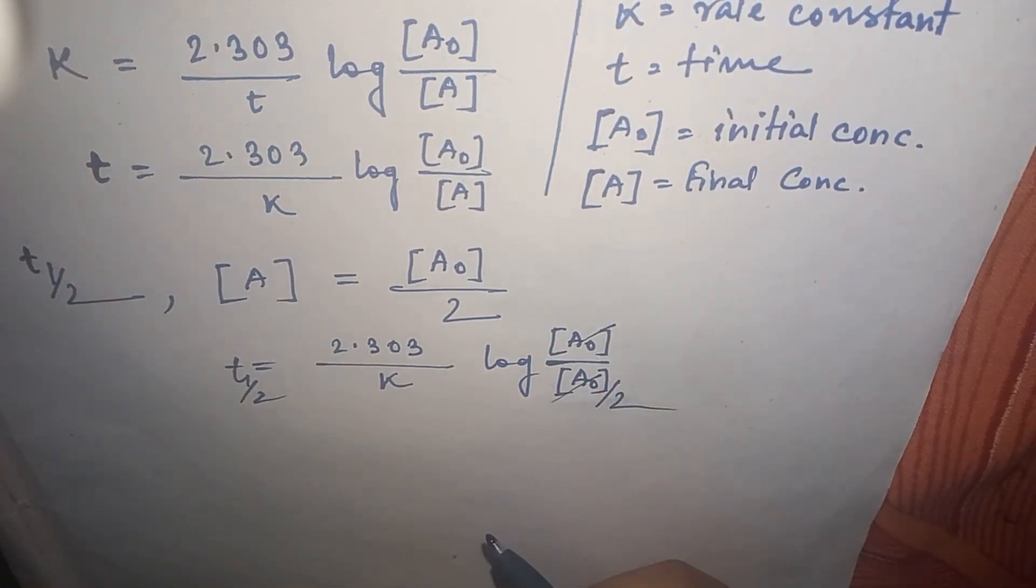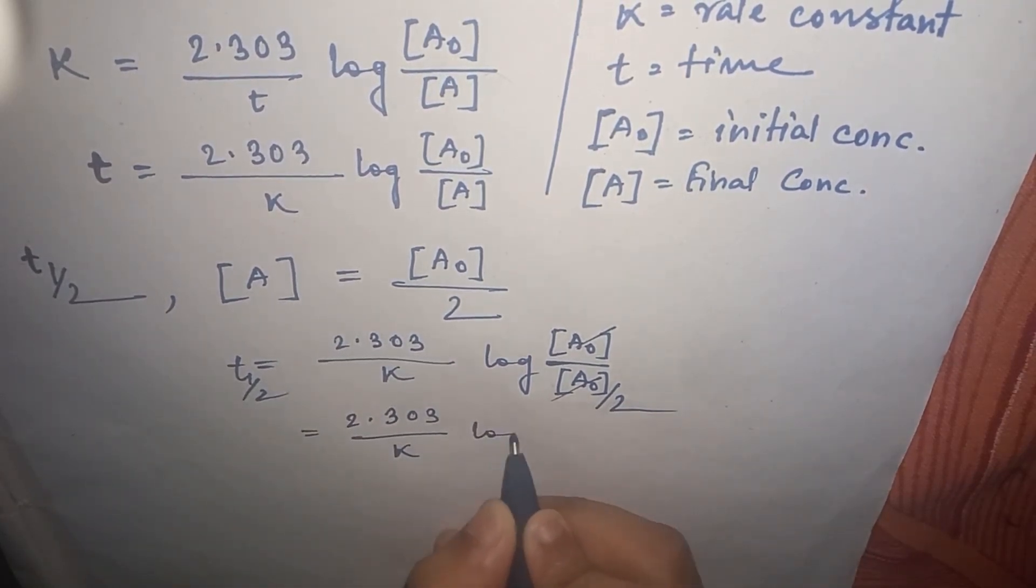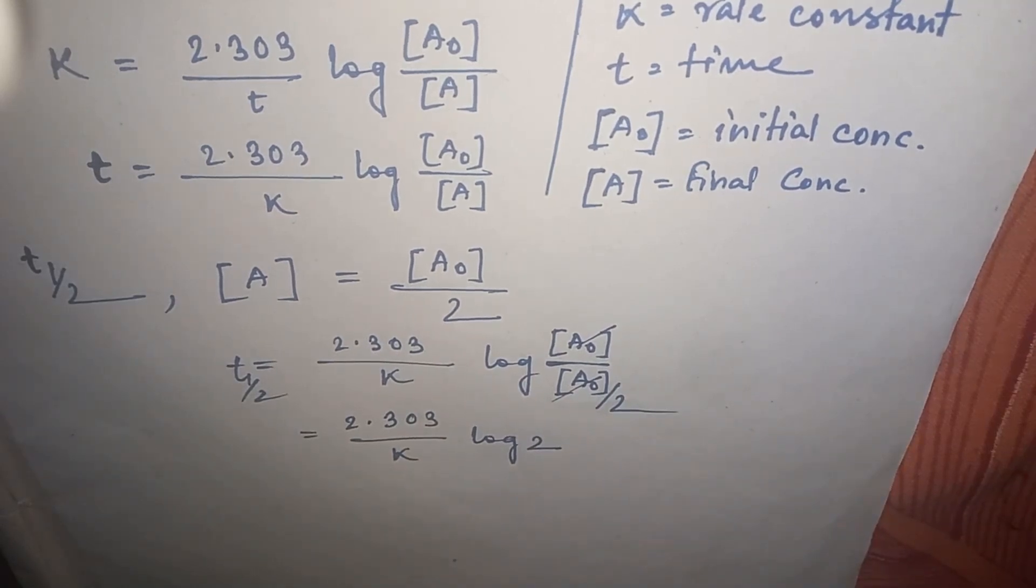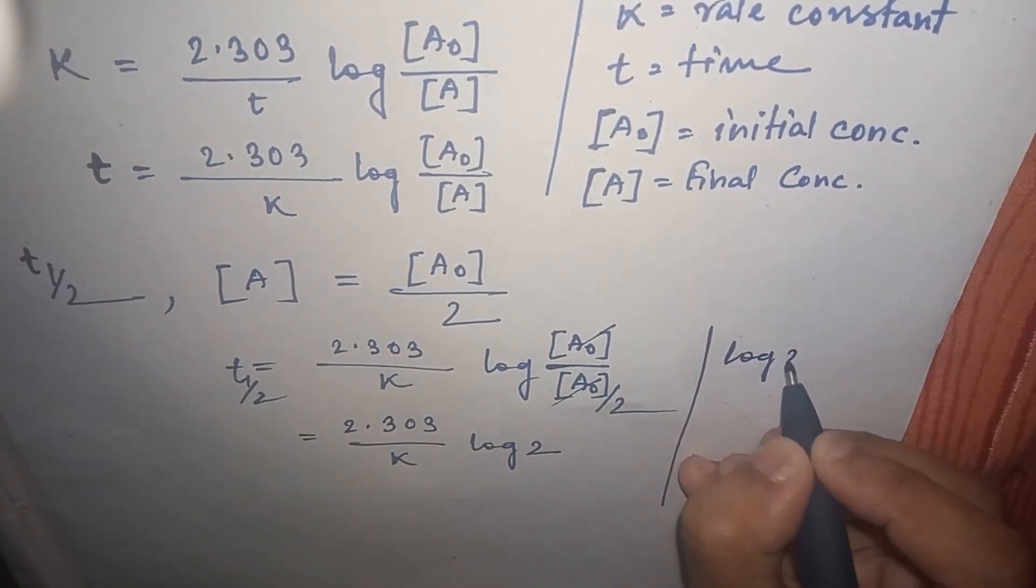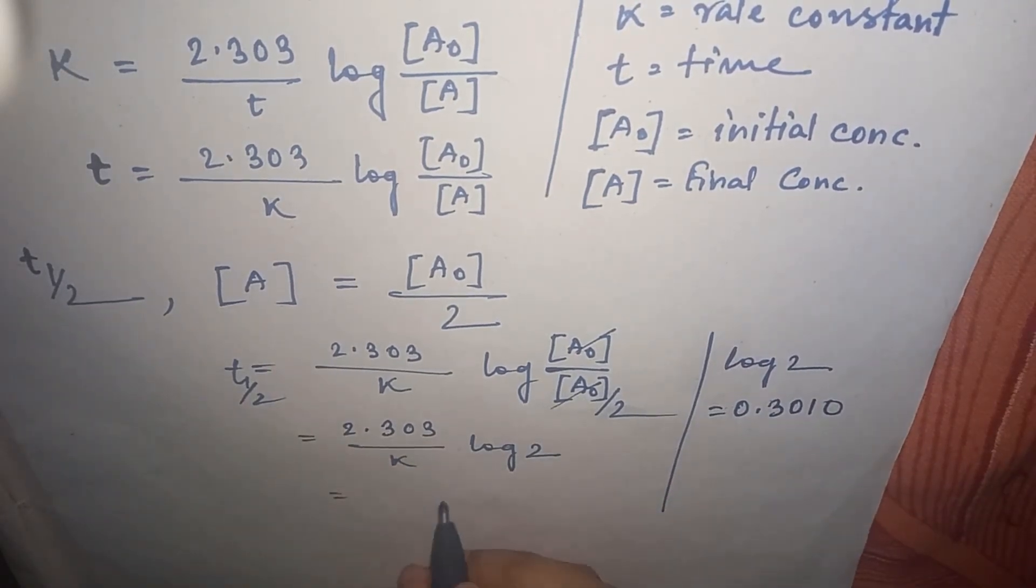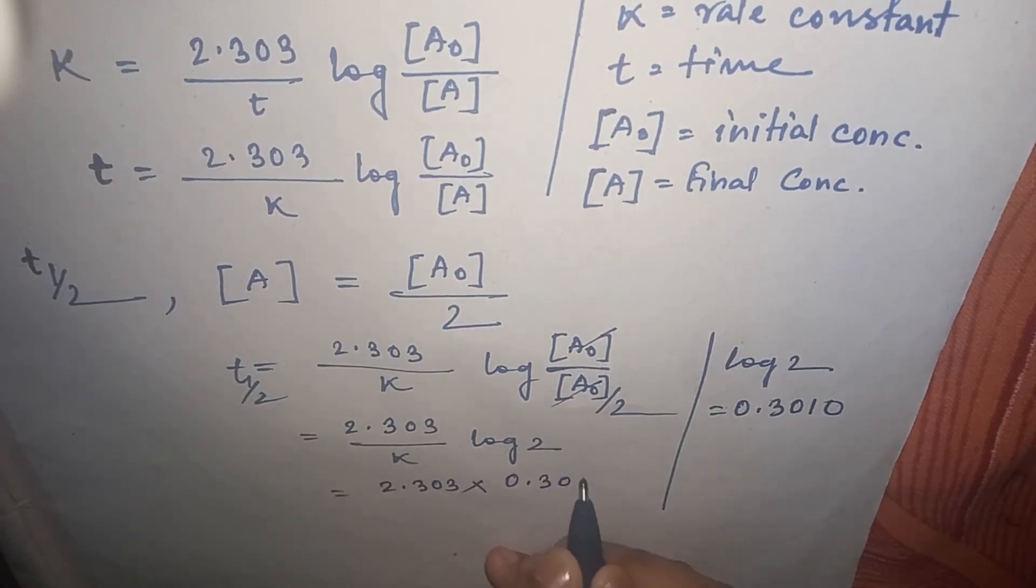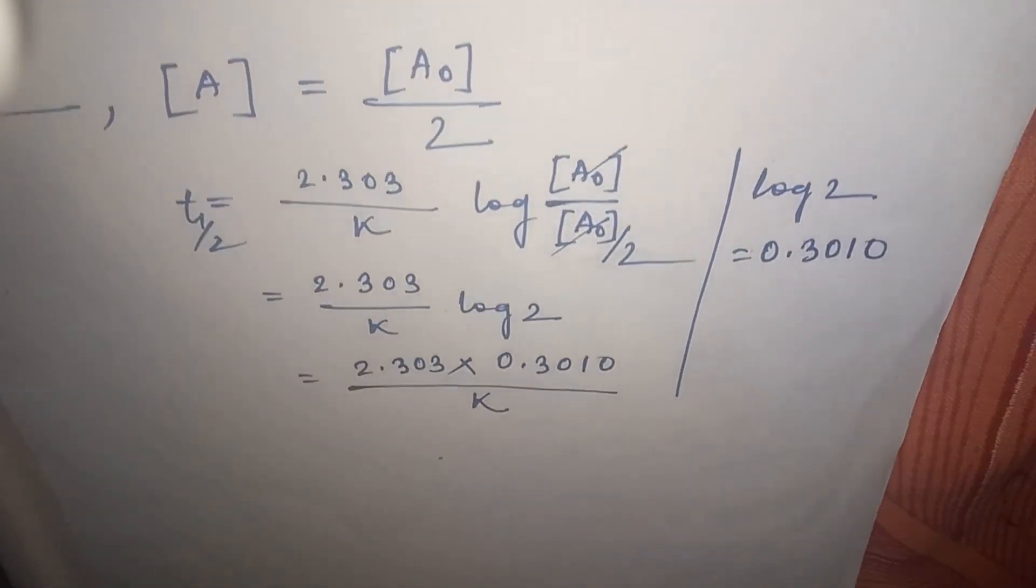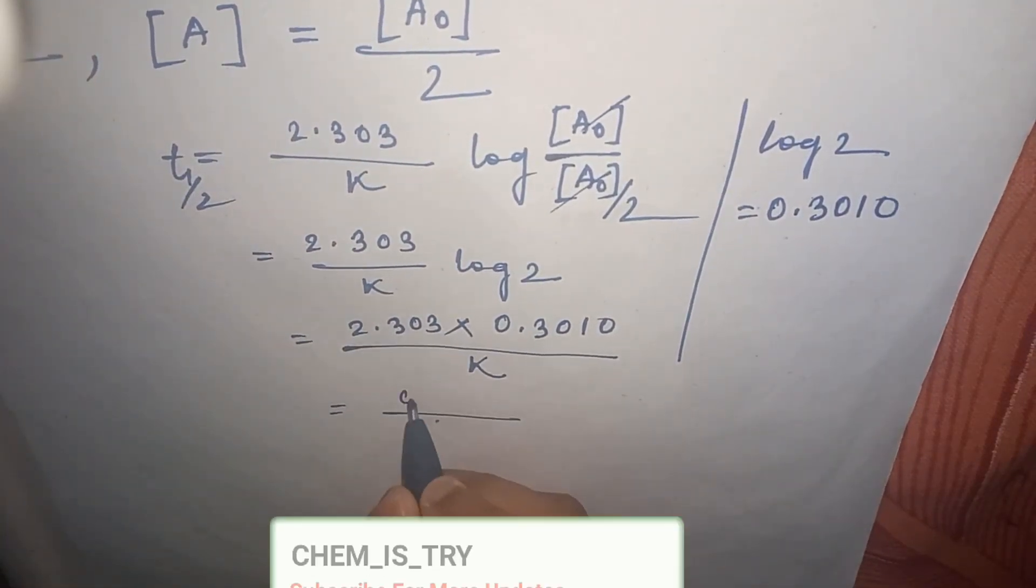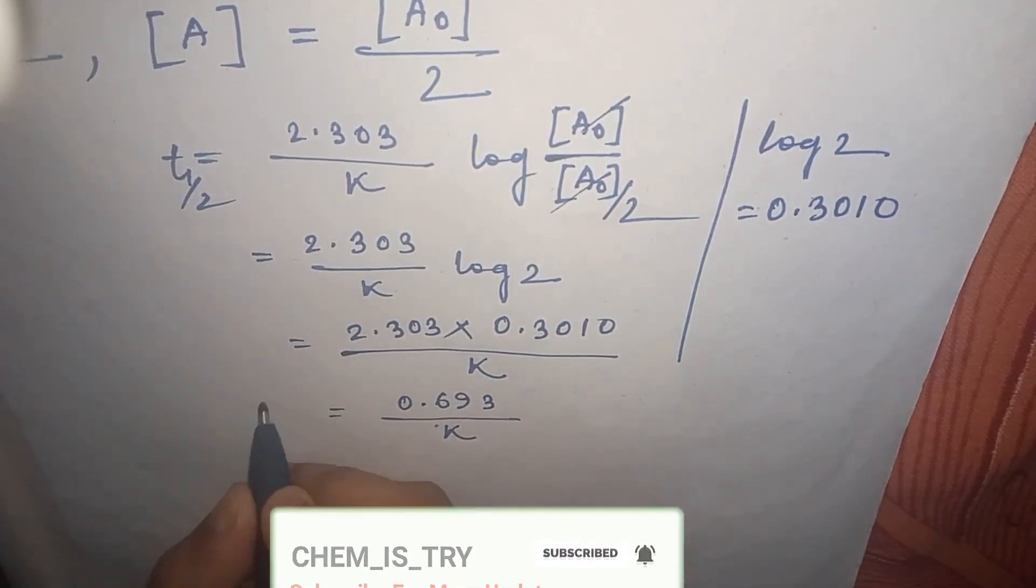Now [A₀] cancels out, so the remaining part is 2.303 by K log of 2. Now we all know the value of log 2 is 0.3010, so put the value here: 2.303 into 0.3010 divided by K. If you do calculation, you will find 0.693 by K.